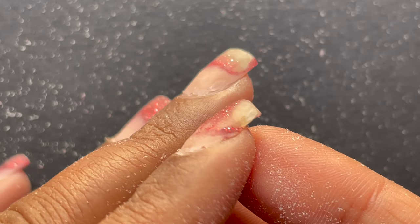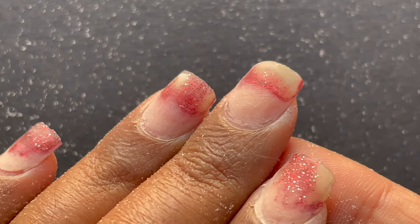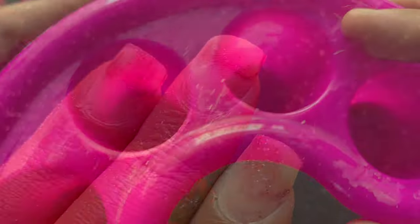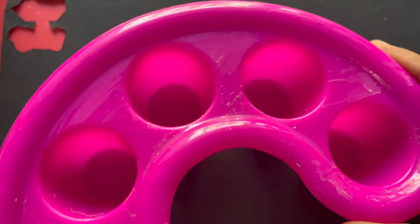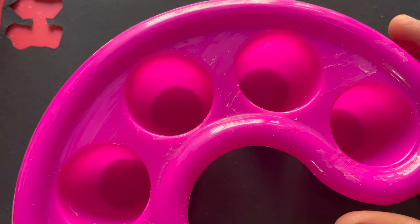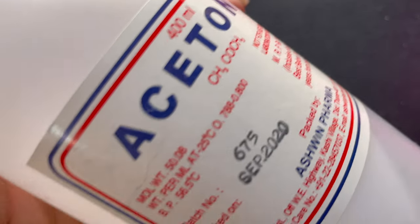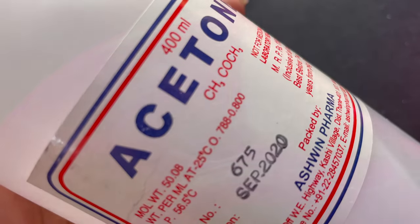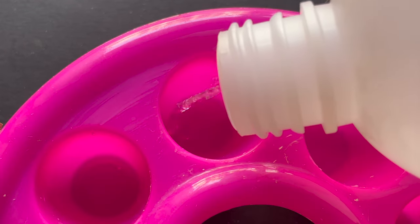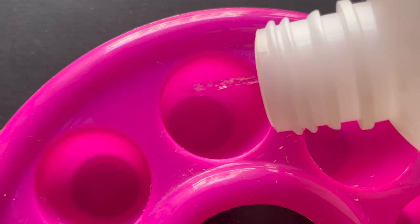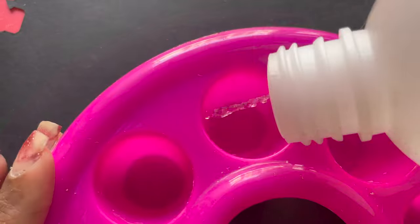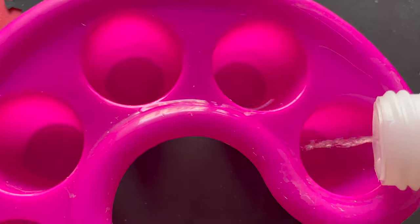I have almost removed all the product from the nail surface. Now you can see only a thin layer is left. Next, I am using this container which I got from AliExpress. I can pour acetone into that container and then dip my fingers in it. If you don't have this thing, you can always use a cotton dipped in acetone.